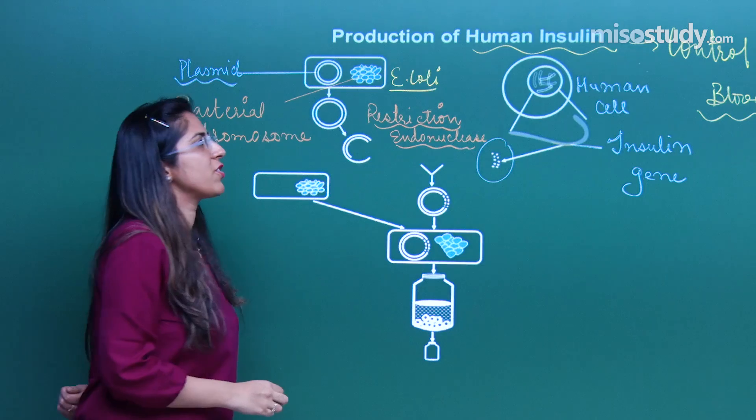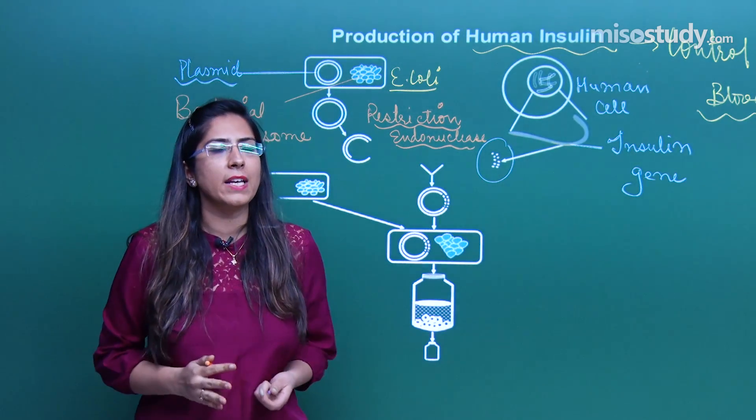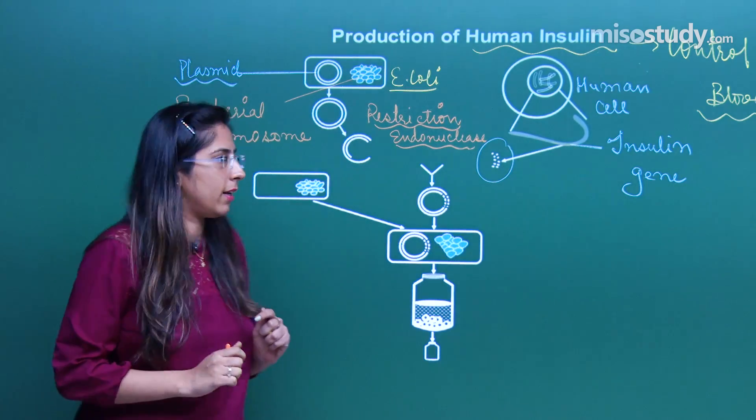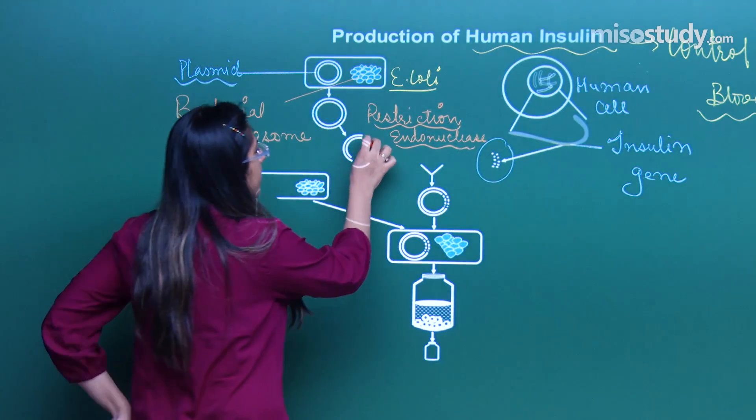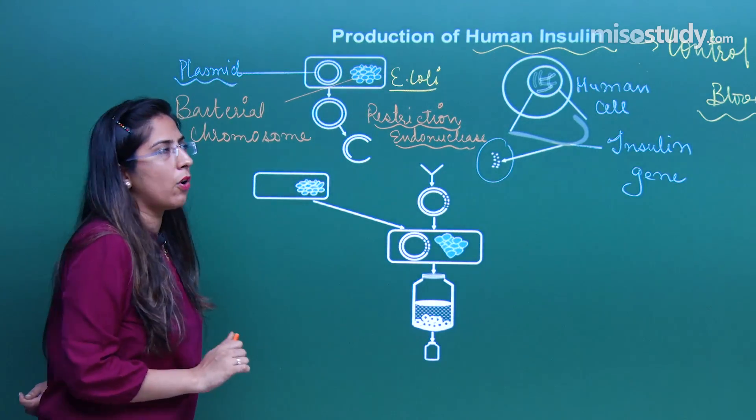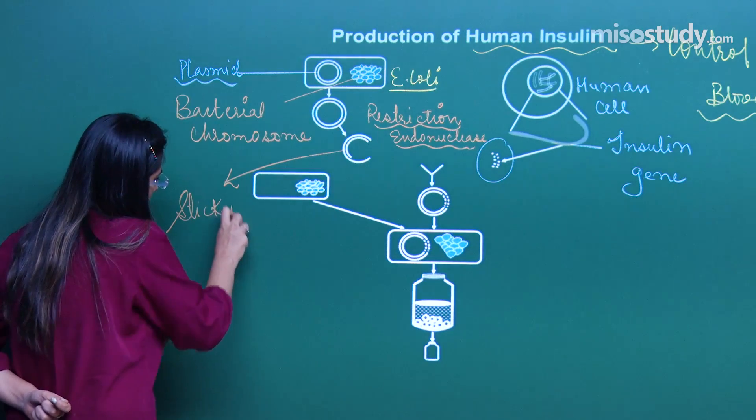Now what is restriction endonuclease? Restriction endonucleases are those enzymes which have the capability to break double-stranded DNA. And as you can see that breakage has occurred. What I have got is the sticky ends.